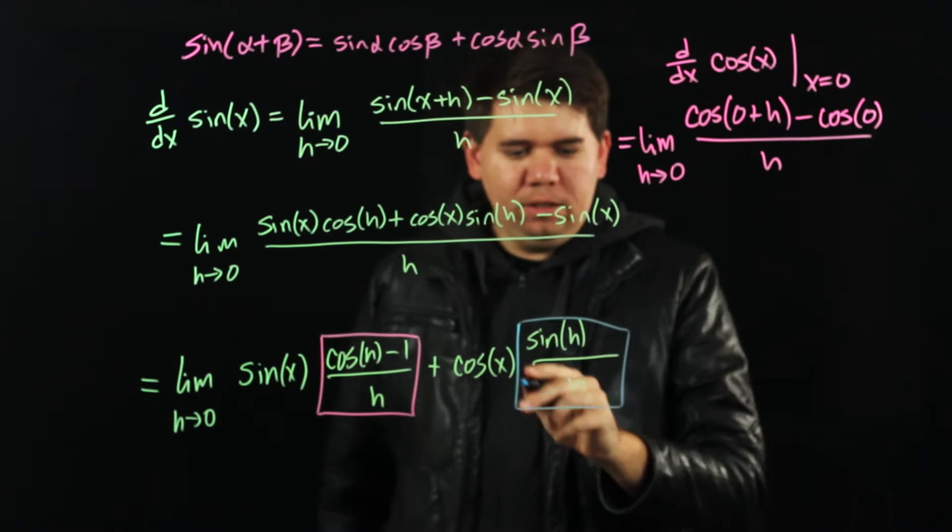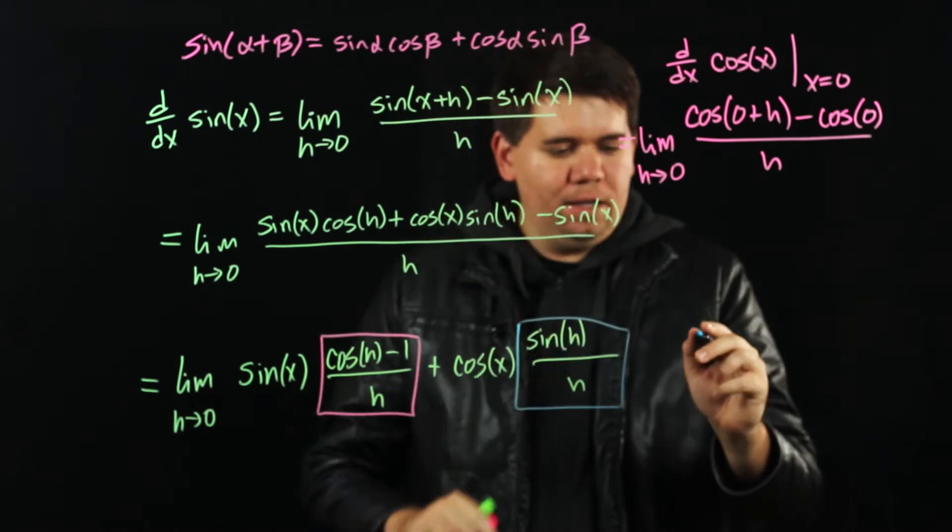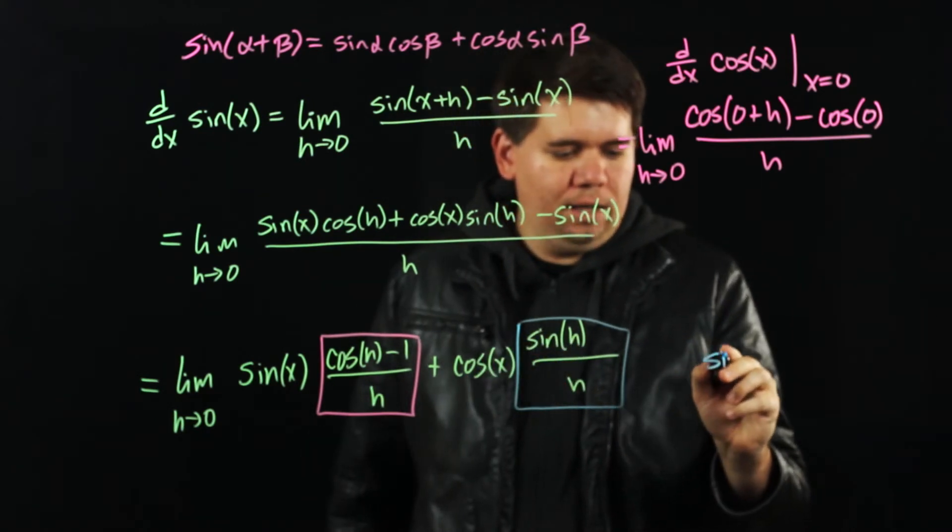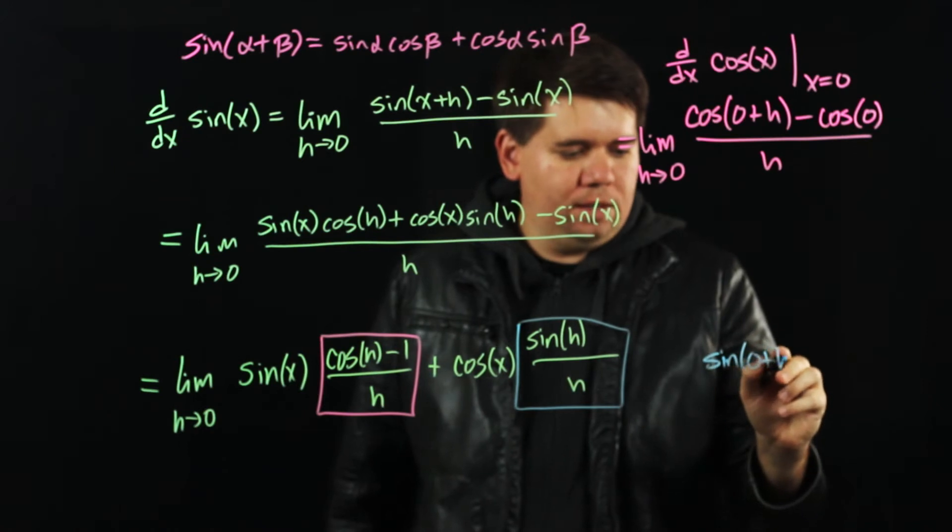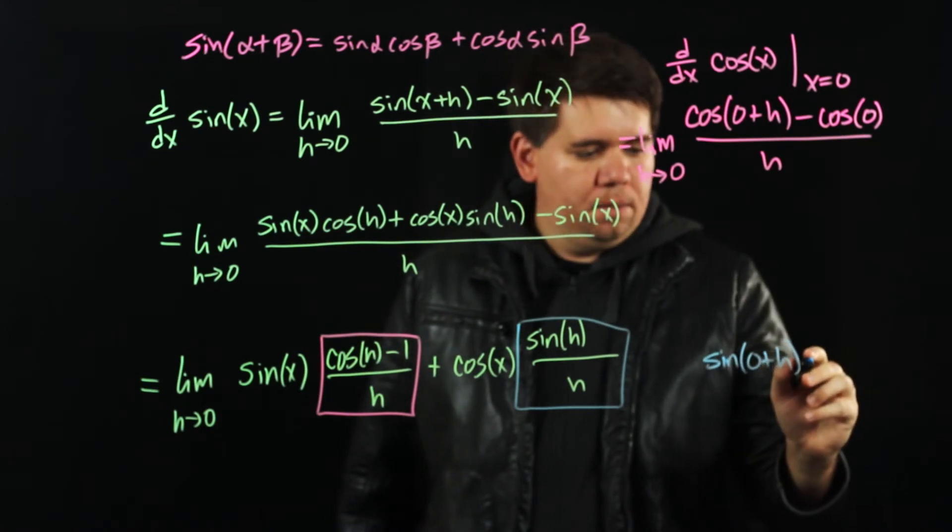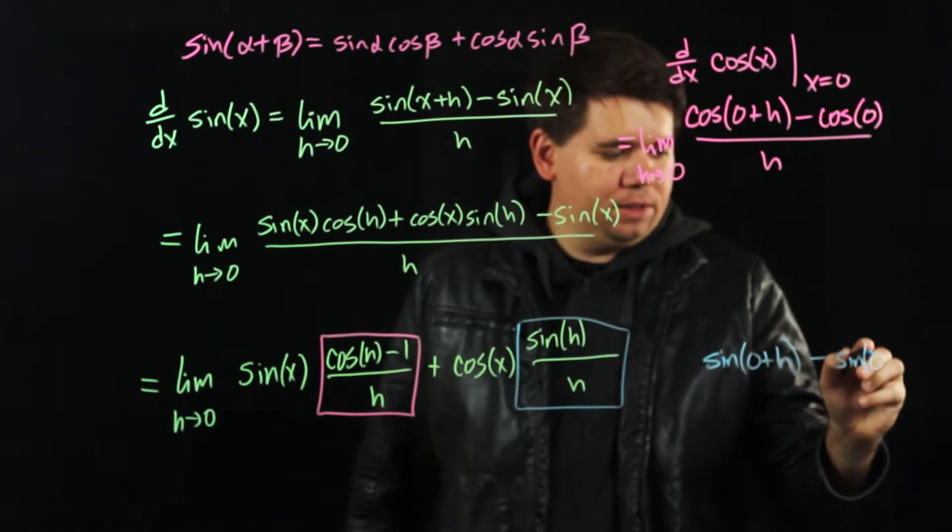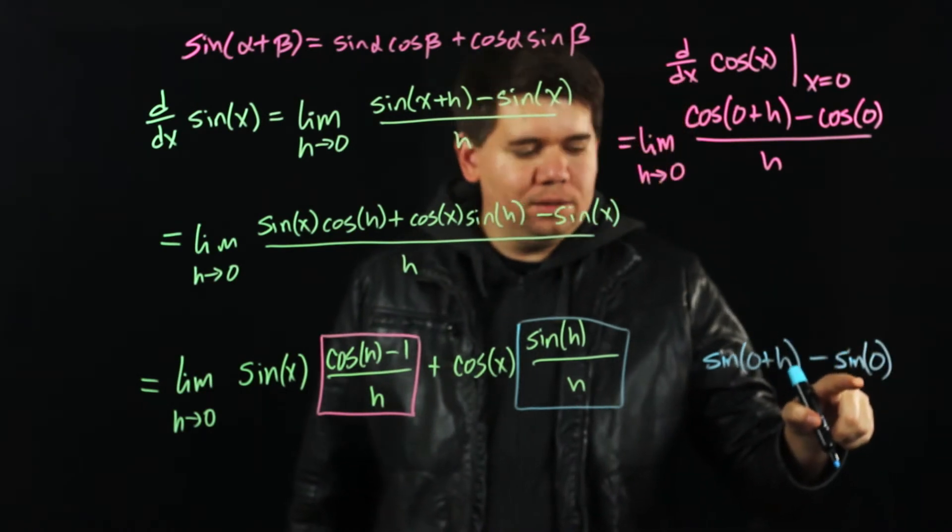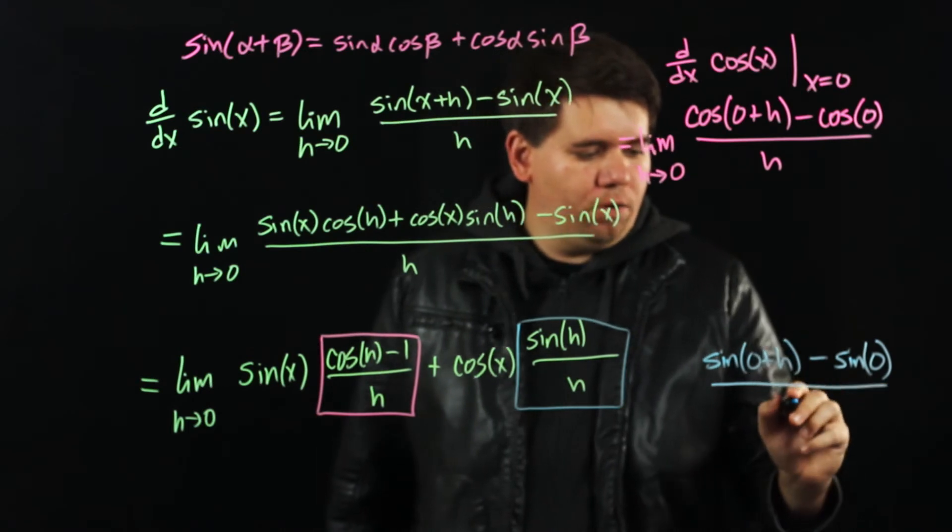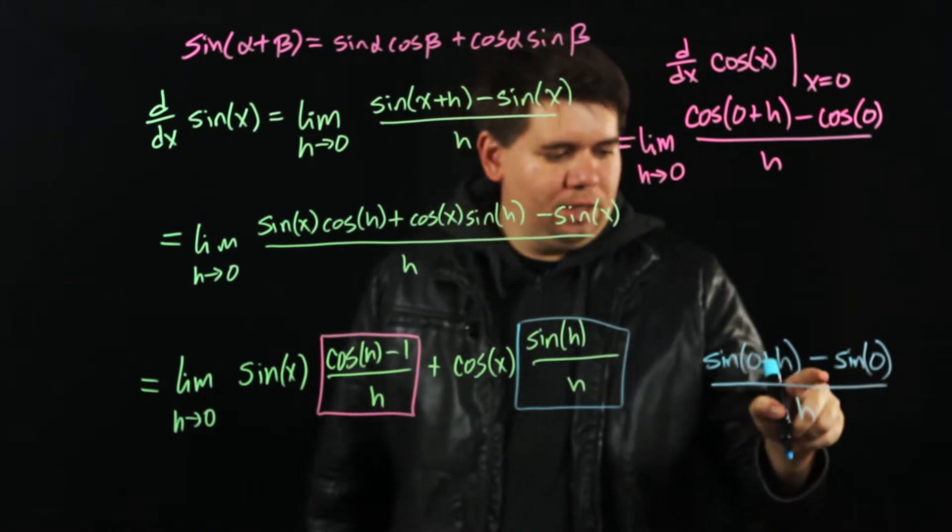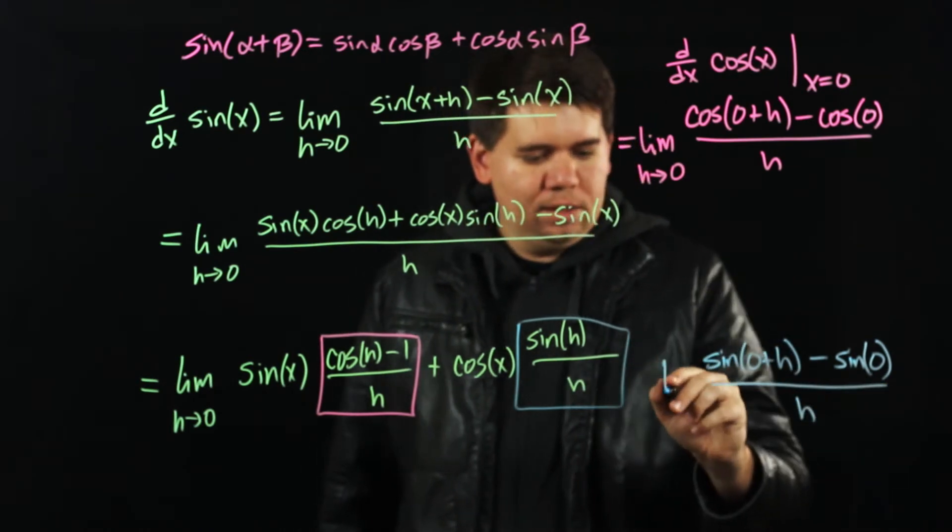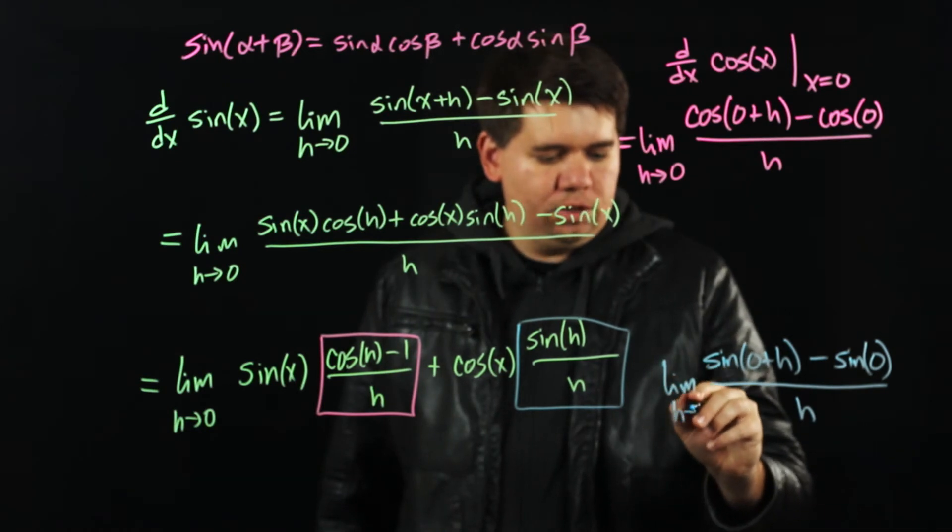In a similar way, this function we can think of as sine of h is just sine of 0 plus h minus, well there's minus nothing, minus 0. But that's the same thing as minus sine of 0. Because sine of 0 is 0 all over h.